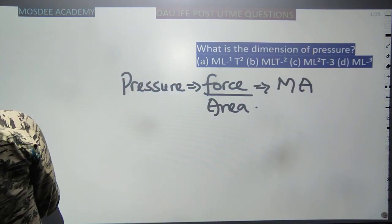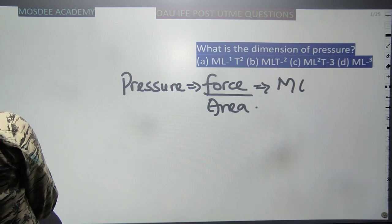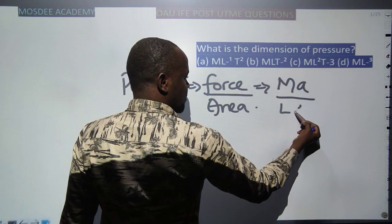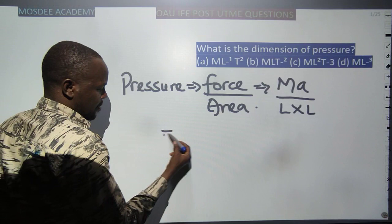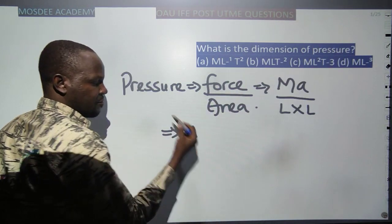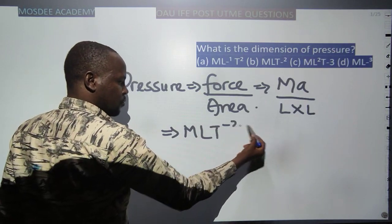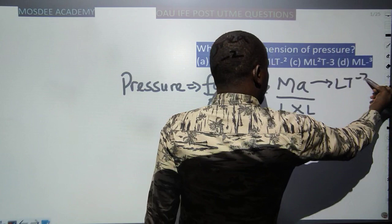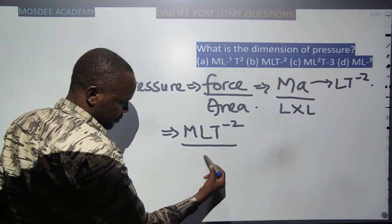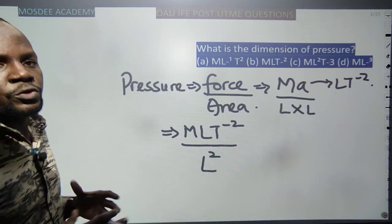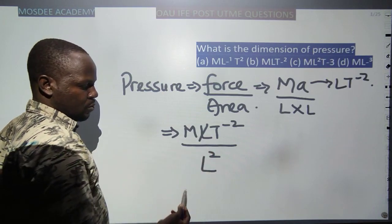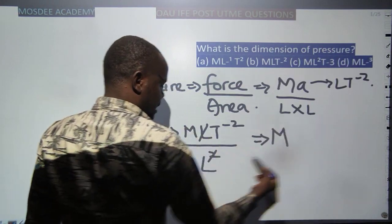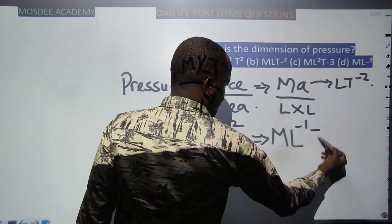I'll use a small letter 'a' for acceleration to avoid confusion. So F = ma, and area is length times length. Therefore, pressure equals mass M, times acceleration LT⁻², divided by area L². Acceleration has dimension LT⁻². Dividing by L² gives us one L cancelling, leaving the final answer as ML⁻¹T⁻².